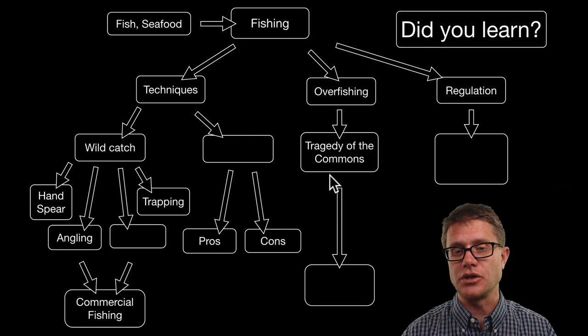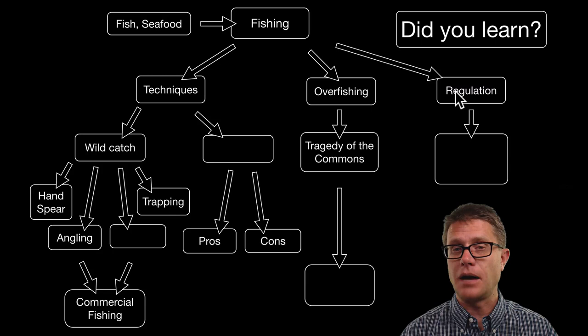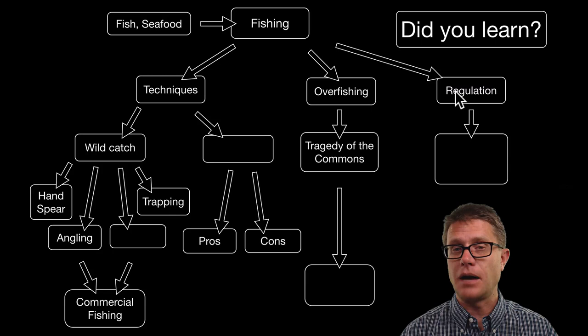Tragedy of the commons, the key point or the solution is a sustainable yield. And then again the best way to regulate fishing is to figure out how many total can we catch. And then give individual fishermen quotas of the amount that they can catch. So that is fishing and I hope that was helpful.